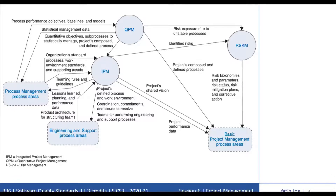The Integrated Project Management process area, IPM, establishes and maintains the project's defined process tailored from the organization's set of standard processes, which you can get from Organizational Process Definition, OPD. The project is managed using its defined process and uses and contributes to organizational process assets. The project's work environment is established from the organization's work environment standards, and teams are established using the organization's rules and guidelines. The project's relevant stakeholders coordinate their efforts through identification, negotiation, and tracking of critical dependencies and resolution of coordination issues.